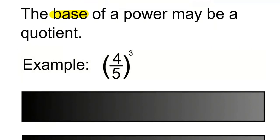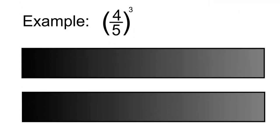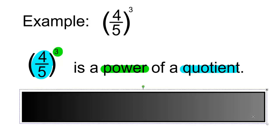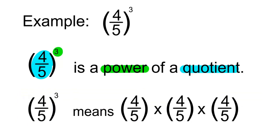For example, 4 over 5 to the power of 3. 4 over 5 to the power of 3 is a power of a quotient. You're going to multiply the base by itself three times, and the base will be the quotient 4 divided by 5. So 4 over 5 to the power of 3 is like saying 4 over 5 times 4 over 5 times 4 over 5.